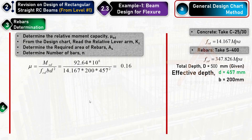For rebar determination, the relative moment capacity μ is calculated as M / (fcd × b × d²). Substituting the values gives μ = 0.16.